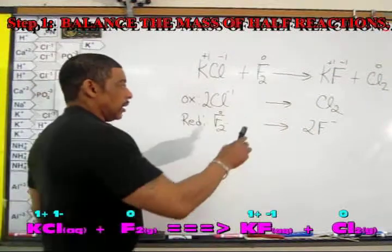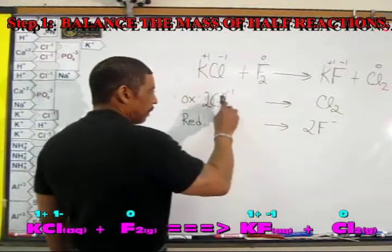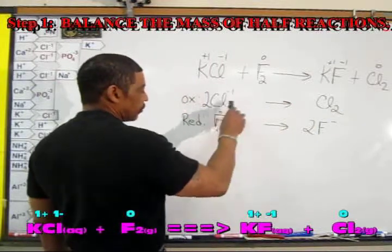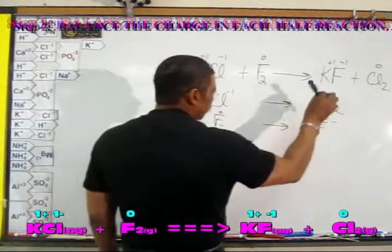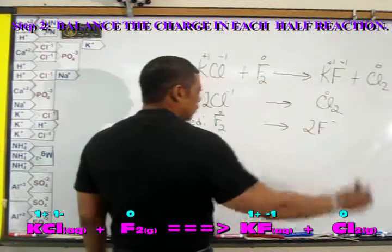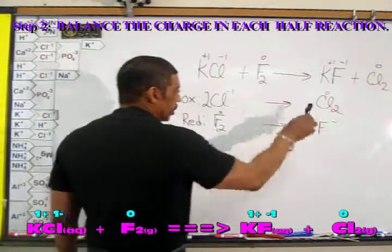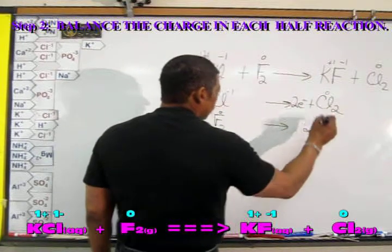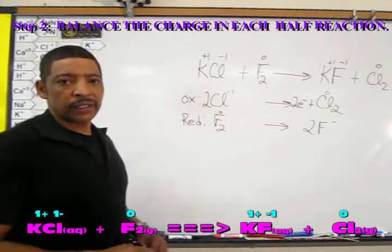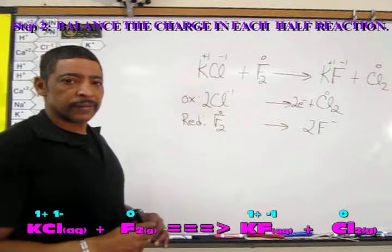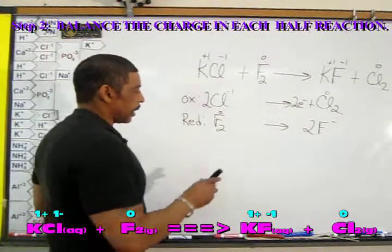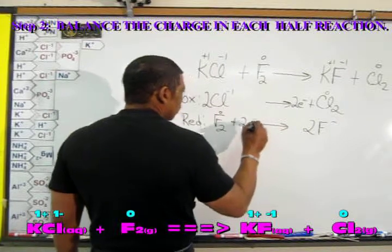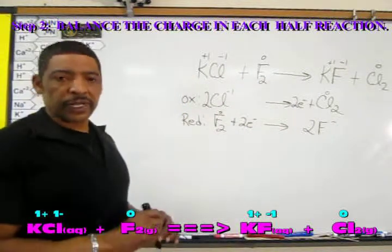On the left side of this oxidation half reaction, the charge is minus 2. On the right side, the charge is 0. So to balance the charge, we may write two electrons on the right side. To balance the reduction half reaction, we place two electrons on the left side.